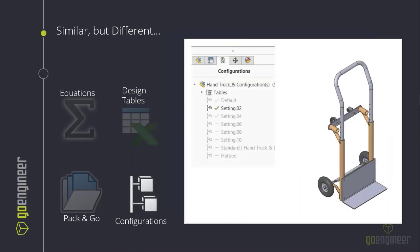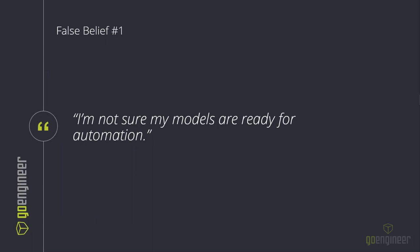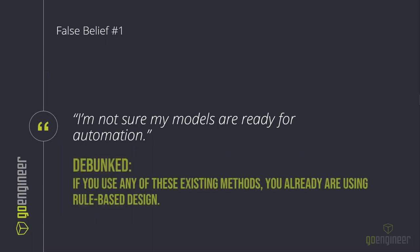If you're using pack-and-go today, your model is about as close to ready for automation as it can be. DriveWorks automates the pack-and-go process and the rule modifications — so wouldn't you rather automate the redundant portion of your day and focus on more custom and nuanced work? Configurations don't require design tables to create, but if you're using them you're already using the same logic DriveWorks uses to suppress or unsuppress features. However, with highly customizable products, even 10 configurable options could mean over 3.5 million combinations — good luck opening that file.